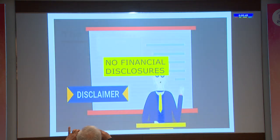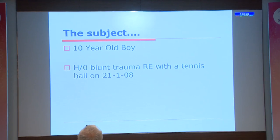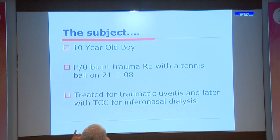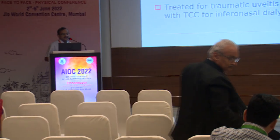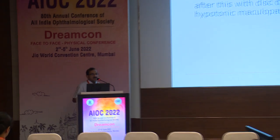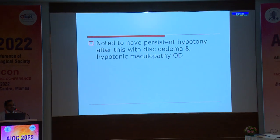I don't have any financial disclosures to make. The subject of my presentation is a 10-year-old boy who presented with a history of blunt trauma to the right eye with a tennis ball in 2008. He was treated for traumatic uveitis and later underwent trans-conjunctival cryo for an inferior nasal dialysis without detachment. However, he was noted to have persistent hypotony and dyskhemia with hypotonic maculopathy in the right eye.